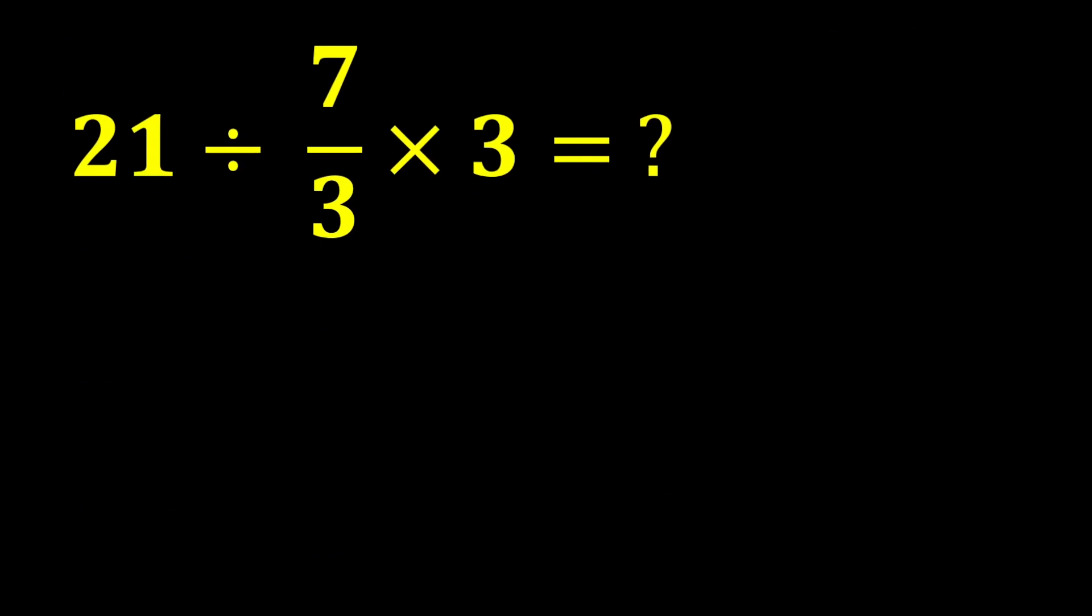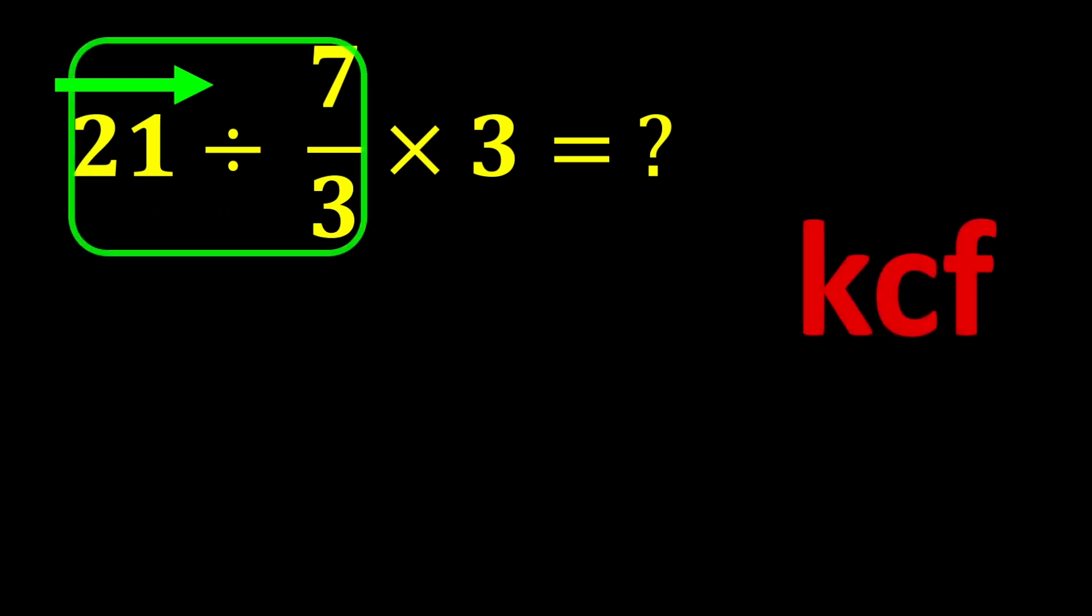In this expression, there is both division and multiplication. According to PEMDAS, multiplication and division have equal priority, so we move from left to right and perform whichever operation we encounter first. In this expression, if we move from left to right, we reach division first, so we perform the division first and then the multiplication.